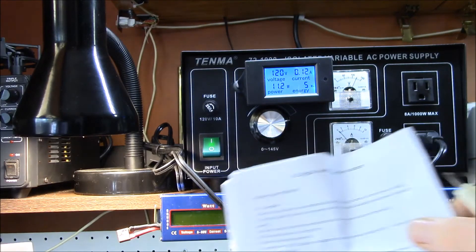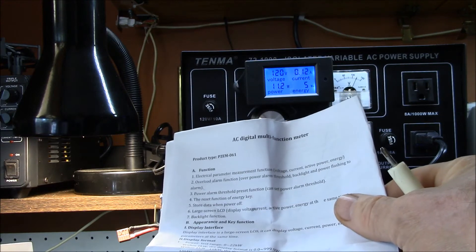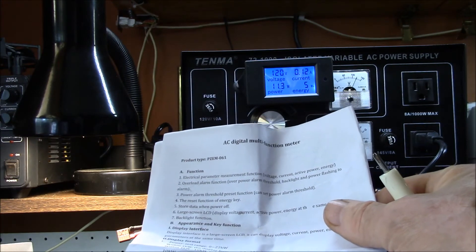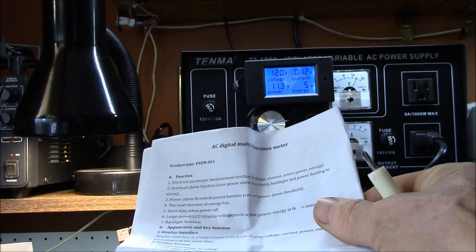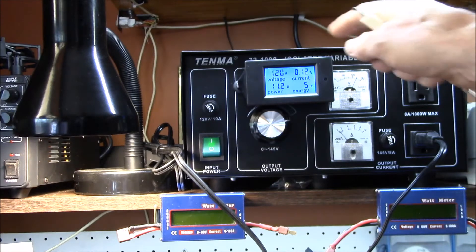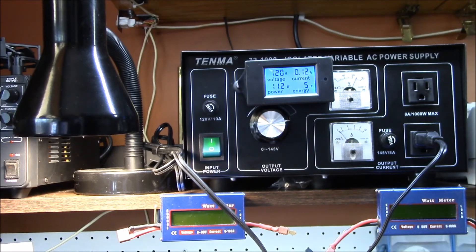Good morning YouTube. I wanted to finish up this little review of this AC digital multi-function meter. The product code is PZEM-061. This is the AC panel meter installed on my variable AC power supply.